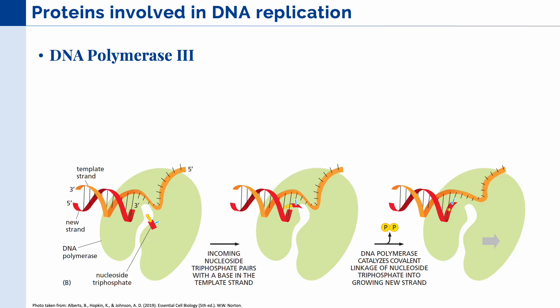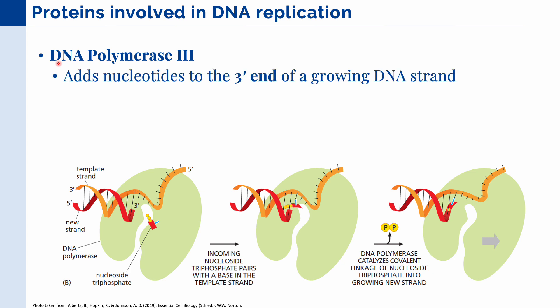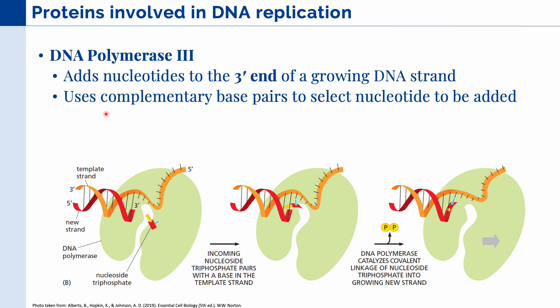Let's talk about the different proteins involved in DNA replication. The first and most important is DNA polymerase 3. The job of this protein is to add nucleotides to the 3' end of a growing DNA strand, using complementary base pairs to detect and select the nucleotides to be added. The nucleotides come from a compound freely floating in the nucleus called deoxyribonucleoside triphosphate. The complementary base pairs are cytosine and guanine, and adenine and thymine.